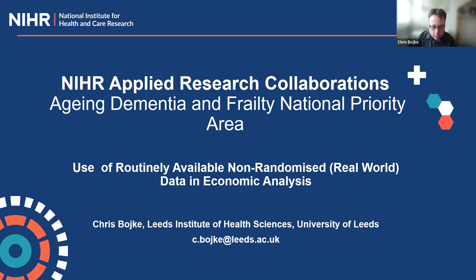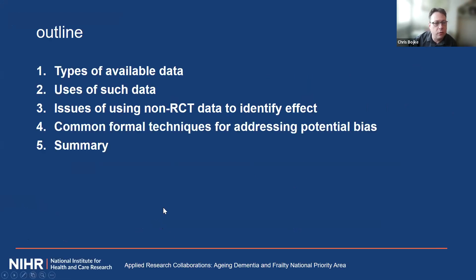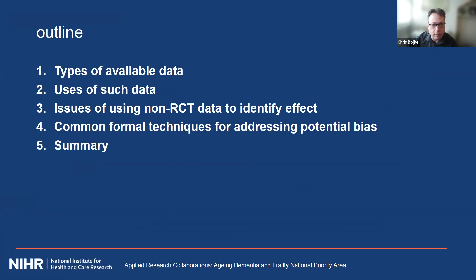Here's an outline of what I want to cover: introducing the types of data commonly used in this area and how they're being used, outlining the big problem with using non-RCT data, and discussing the sophisticated methods we have to address that. The key point is that whenever you're using non-randomized controlled trial data, you have to have some kind of method to accommodate the possible biases — you can't just leave it to chance.